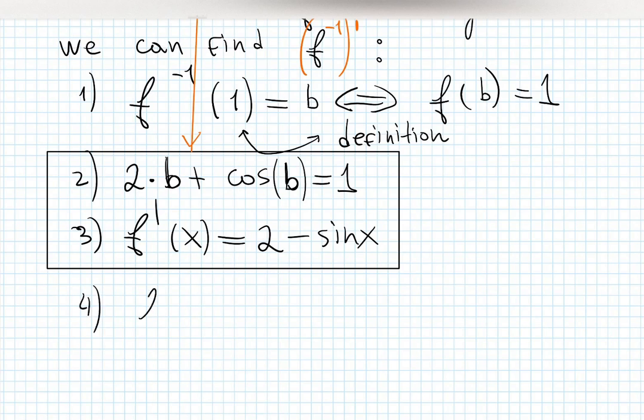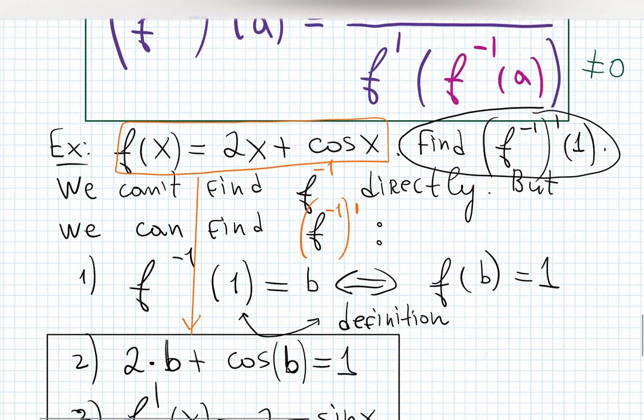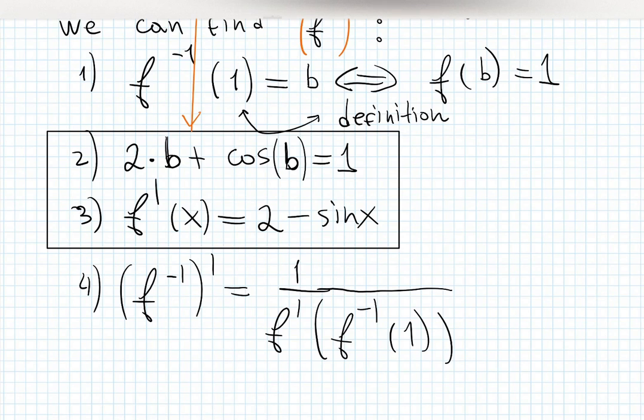Finally I can plug things here. (f^(-1))'(1) by definition is 1 over f'(f^(-1)(1)), which is f'(b). When does 2b + cos(b) = 1? Cosine of 0 gives you 1, 0 times 2 is 0, so 0 + 1 = 1 works. So b = 0. Sometimes if you have the result but not the input, you can guess.